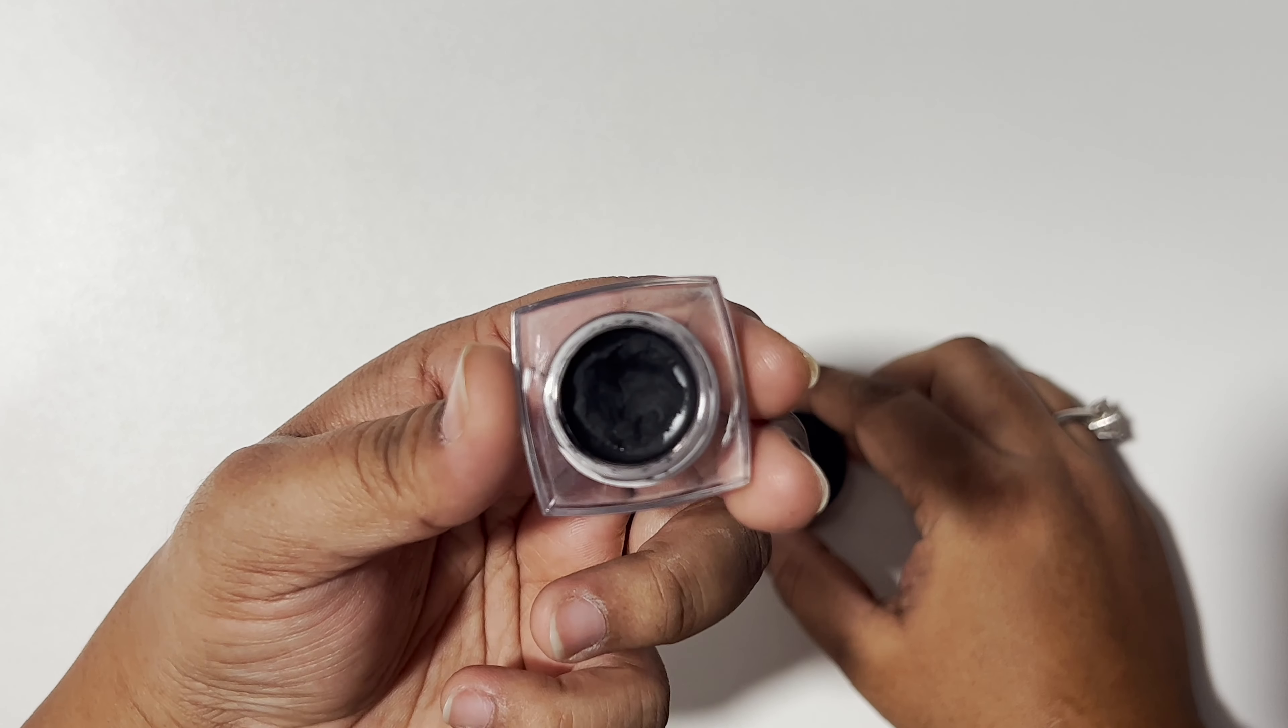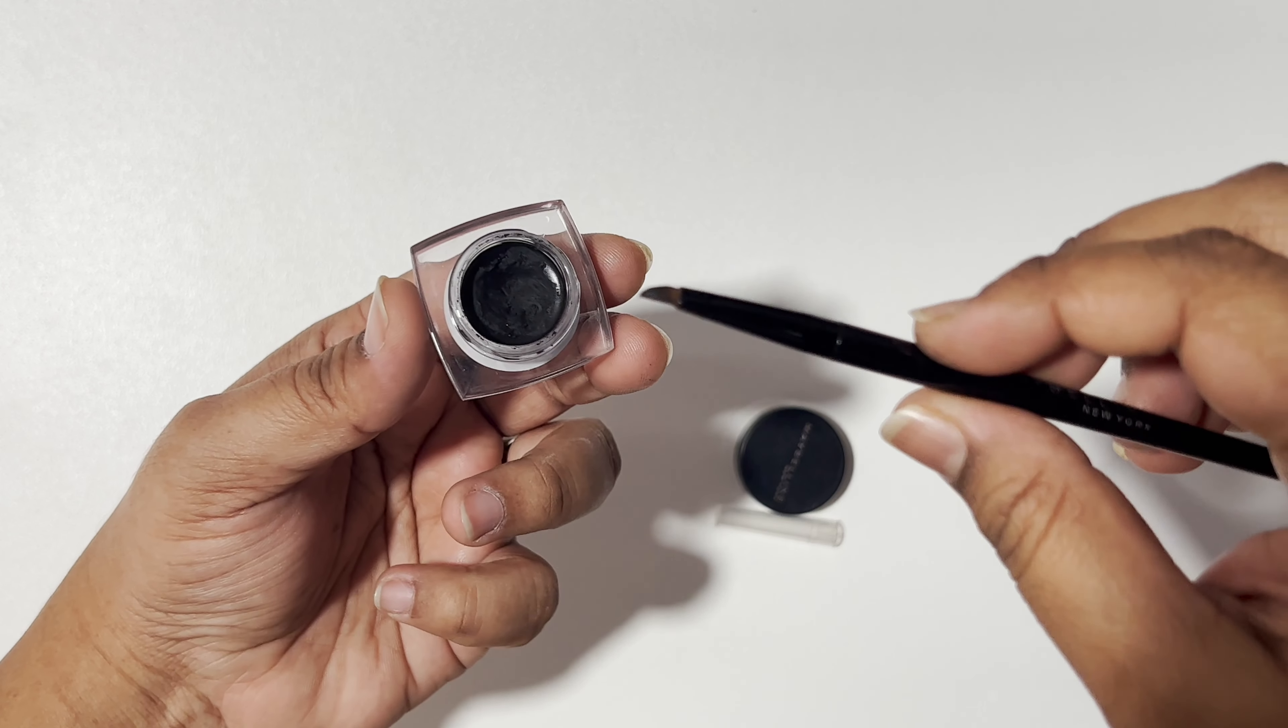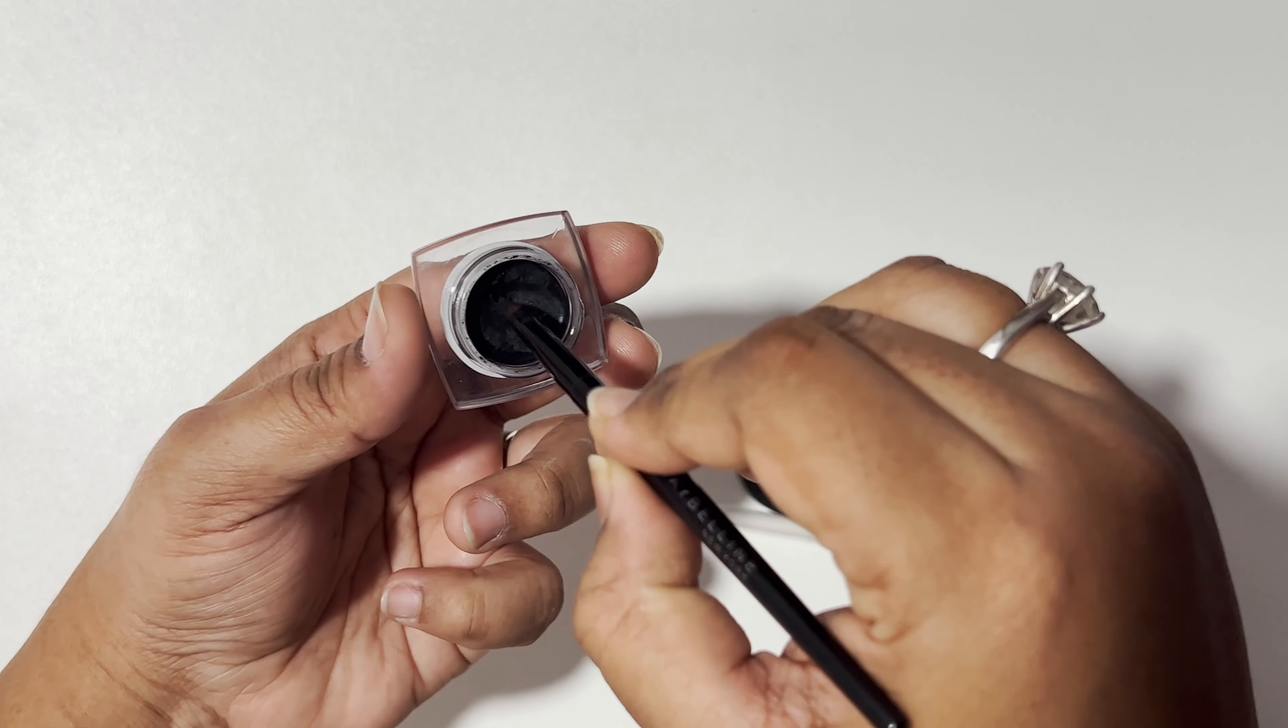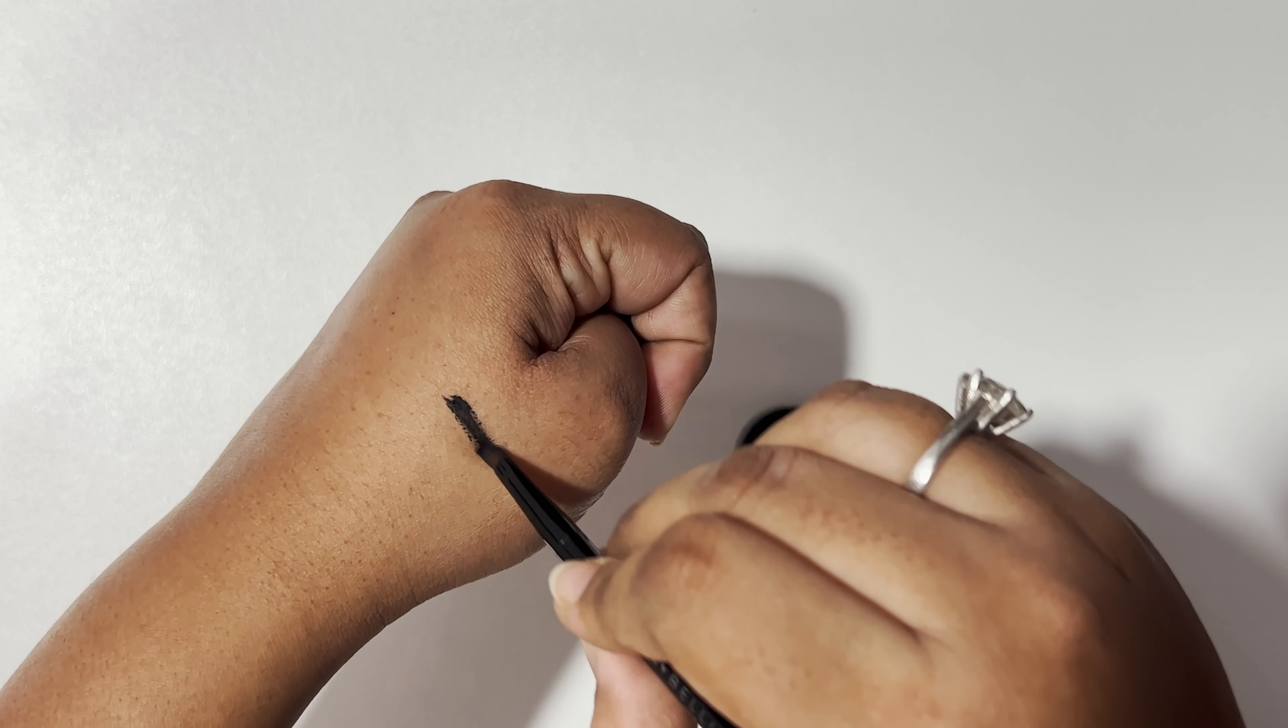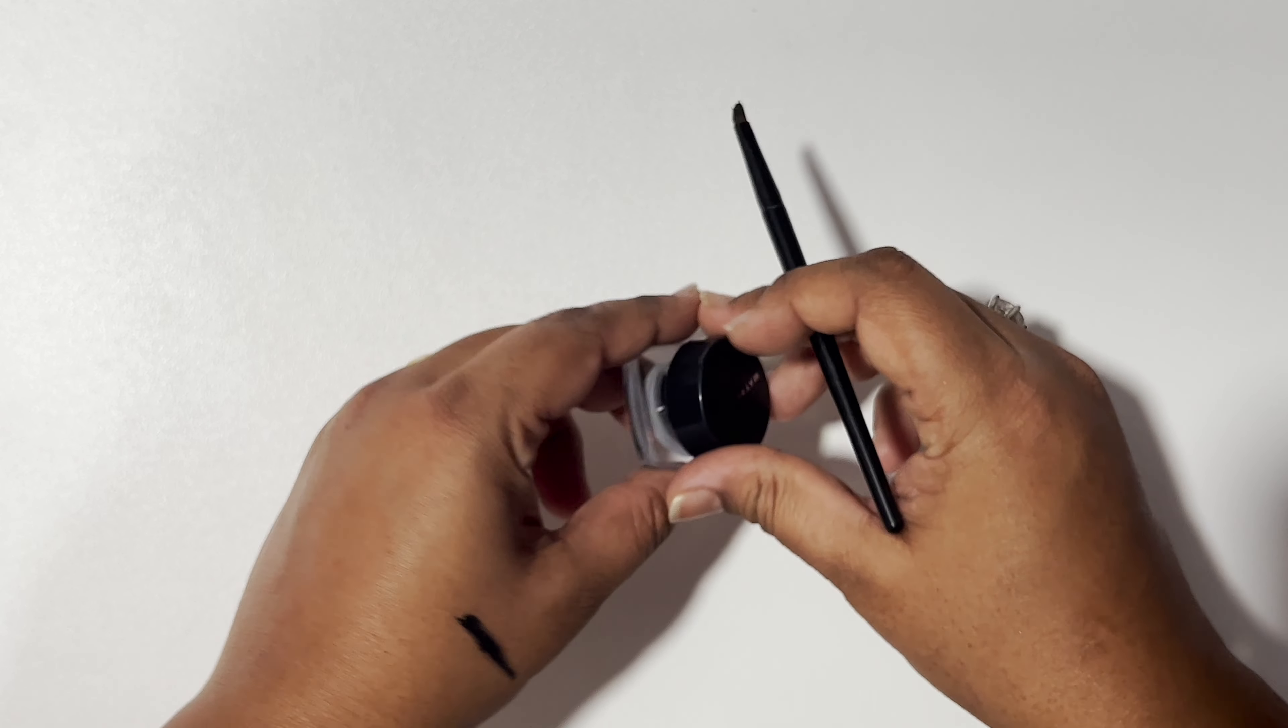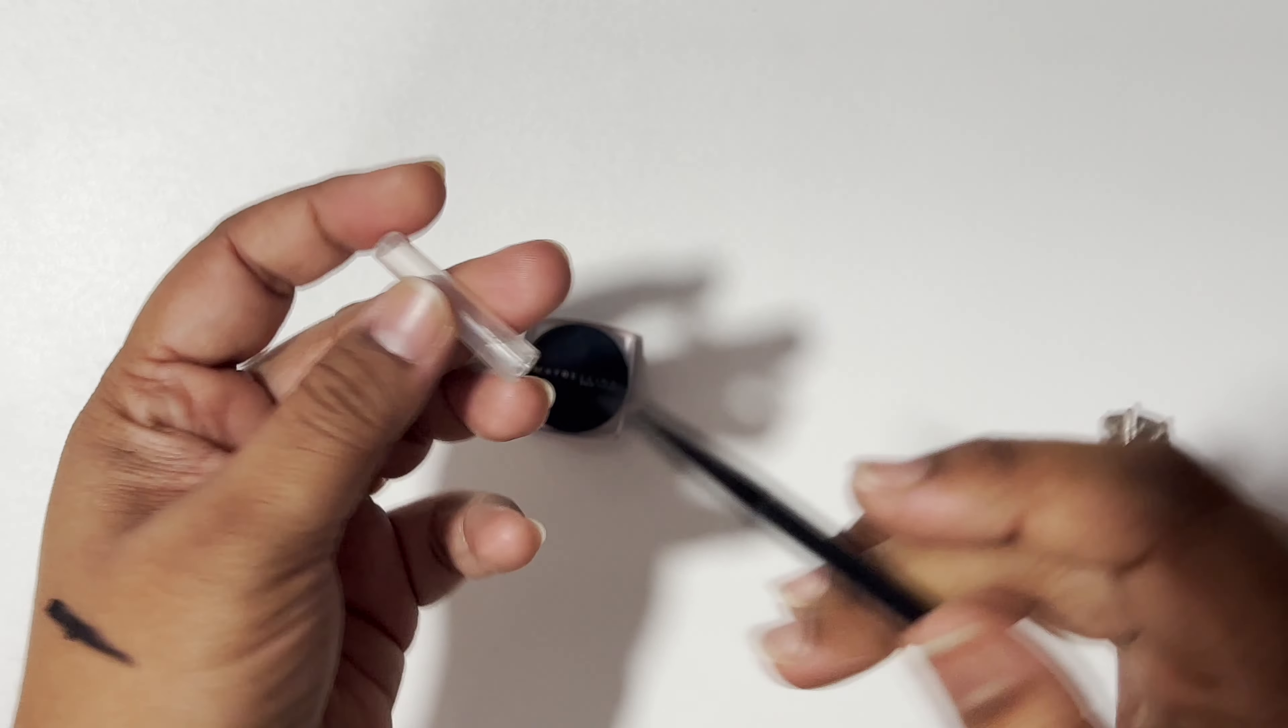This eyeliner comes with a brush, which I'm going to show you how to use. You can see that it's not even sticking to my brush because it's so dry. I'll quickly show you the swatch on my hand—if you can see, it's really dried up and not even sticking to my hand.